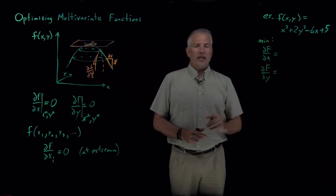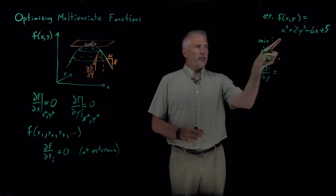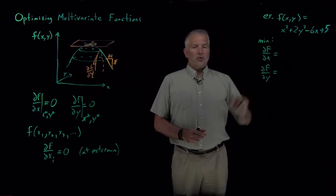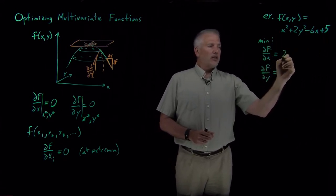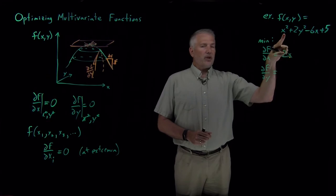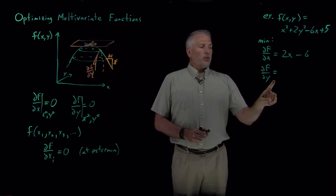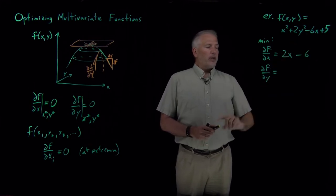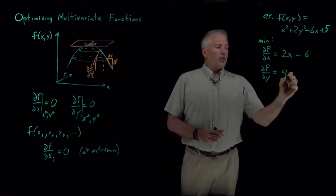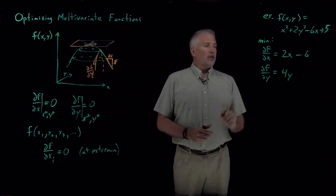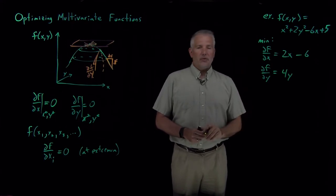So I have to be able to take the partial derivative with respect to x. Pretending the y's are constant, taking the derivatives with respect to x, I just get 2x from the x² term and the -6x term gives me -6. Partial derivative with respect to y: 2y² when I take the derivative becomes 4y, and all the other terms go away when I take the y derivative. So those are the partial derivatives with respect to x and y.